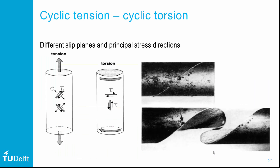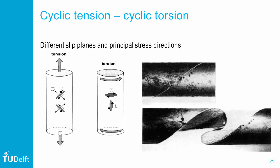Because cyclic slip contributes to the nucleation and early propagation of microcracks, the load case will have a substantial effect. Take for example a bar loaded in torsion versus tension. In tension, cyclic slip occurs at 45 degrees to the load, while in torsion, maximum shear occurs both parallel and perpendicular to the loading direction. The normal stress component in tension helps with the transition from cyclic slip to microcrack and subsequently opens that microcrack — this opening is absent in torsion, which hinders microcrack formation at low amplitude loads. If cracks do initiate, they propagate perpendicular to the principal stresses, resulting in spiral fracture surfaces in the case of torsion.